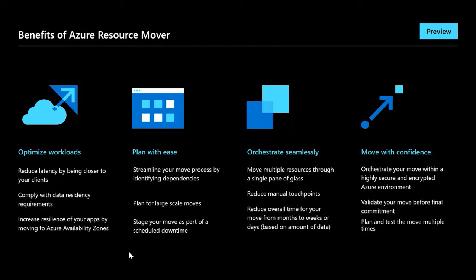The third pillar is orchestrate seamlessly. The movement of resources experience has been improved to such an extent where, with a single pane of glass, you can move any resource type following the same structured framework and step-by-step process — giving customers a much more user-friendly and seamless move. Because of this single pane of glass and abstraction of different technologies underneath, the different manual touch points are reduced. This actually helps reduce the overall move time — compared to the previous model, potentially reducing from months to weeks to maybe even days.